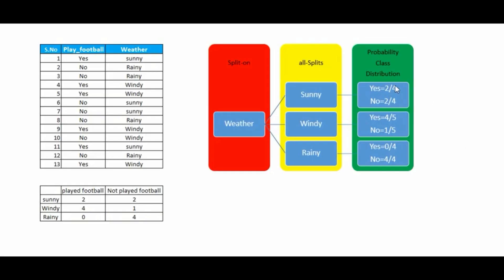We will try to split our data based on the weather. Out of 13 days, 4 days the weather was sunny, and on those 4 days Ara had played football 2 days. On windy days he has played football 4 times out of 5 times. On rainy days, he has not played football. So we are going to split our data on weather — there are 3 splits: sunny, windy, and rainy.